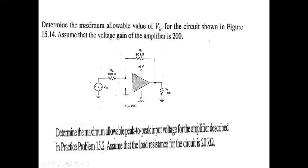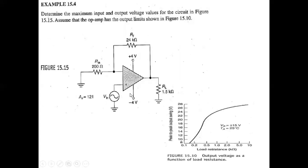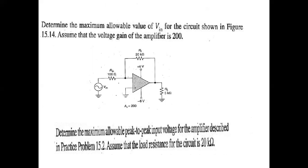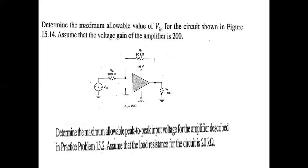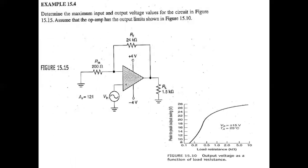If we increase the load resistance to 20kΩ, how much will the maximum output voltage be? Since RL is greater than 10kΩ, observing the peak-to-peak value, it will be 10V and the peak value is 5V. So the formula Vout = Av × Vin will be applied and there will not be any change in the approach. After that we will see the next example.